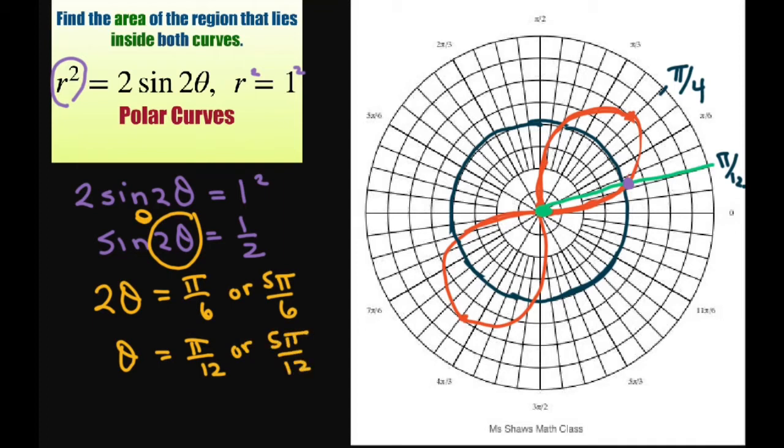I only want to look in quadrant 1. So this is the intersection here at π/12. There's symmetry here going on at π/4.